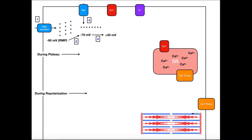Now let's look at what happens physiologically during the action potential. This entire square represents one cardiac muscle cell. Down here in red is the sarcoplasmic reticulum, and over here is the sarcomere of that cardiomyocyte. There's a gap junction here assumed to be connected to an adjacent cell on the left. The first step is positively charged ions — cations — moving through the gap junction from that adjacent cardiomyocyte into this one.